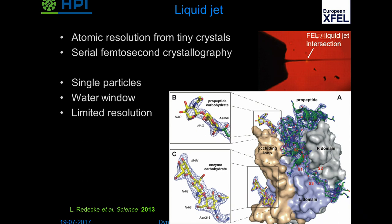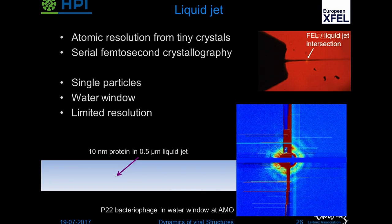Liquid jets provide atomic resolution from small crystals — this is one of the first examples published in 2013 on a protein from Trypanosoma, which causes sleeping sickness — very nice for serial crystallography. However, if you're imaging in the water window because you have a lot of water around in the liquid jet creating background, this is a 10-nanometer protein roughly the size of RNA polymerase. The only way you can look at that is if you go to the water window, which limits your resolution to something like 4 nanometers. Here's an example from bacteriophage P22.